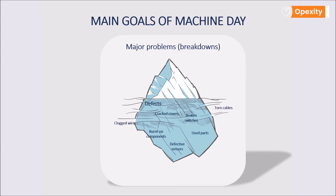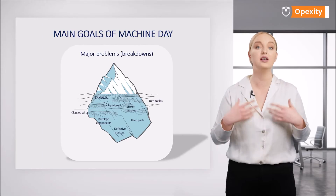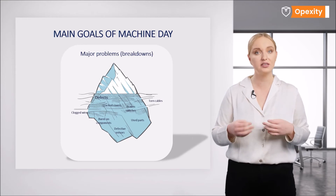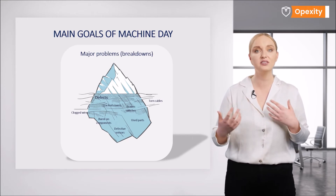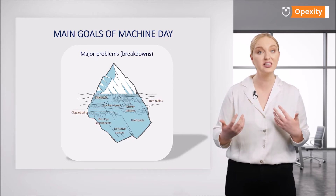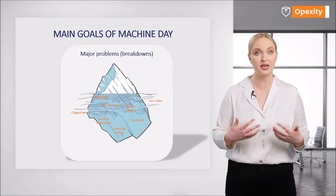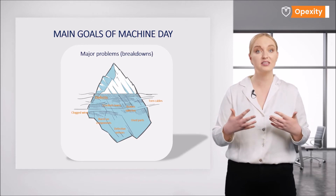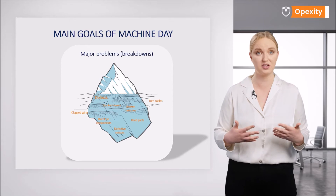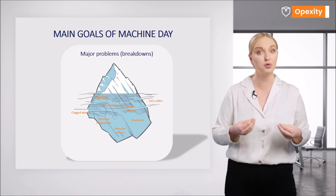Anomalies are situations that we are able to notice if we carefully look at the machine, bend down, and look behind the covers. Of course, time should be allocated for such activities. Machine Day is an introduction; then the necessary cleaning activities should become a habit and part of the cleaning instructions within the 5S system. The material on TPM rounds — another lesson in this course — discusses case studies that show how negative and costly the consequences are when we just pretend to have 5S and limit it to a general cleanup of the workstation. I encourage you to explore that lesson as well.